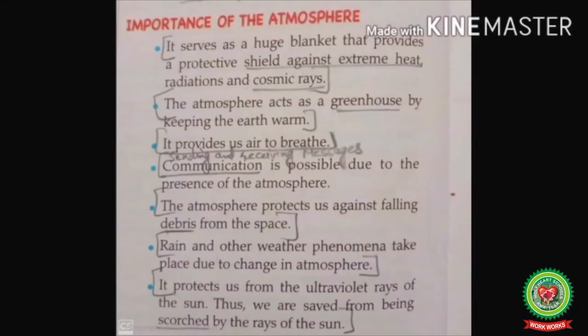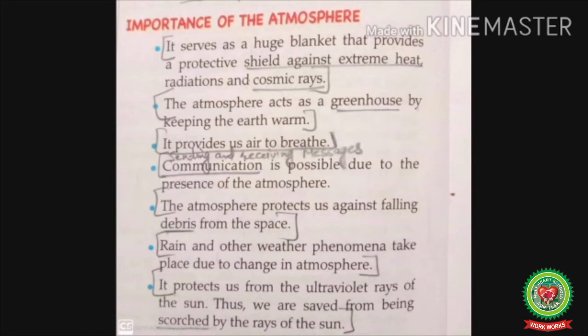The atmosphere protects us from falling debris — natural loose material consisting of large pieces of rock — which does not reach the surface of the earth due to the atmosphere. Rain and other weather phenomena also take place due to changes in the atmosphere.